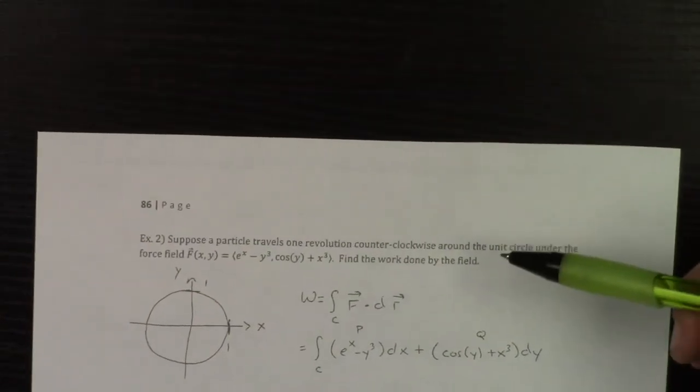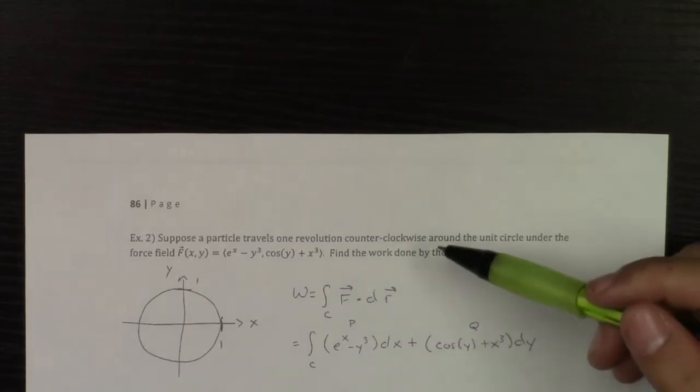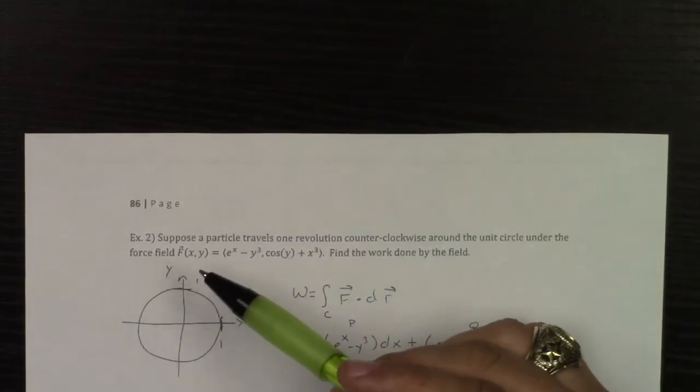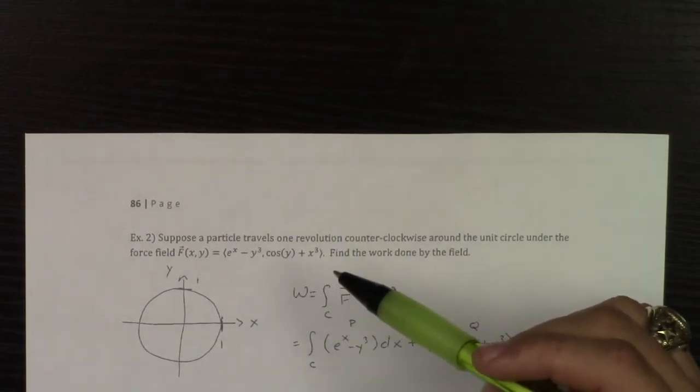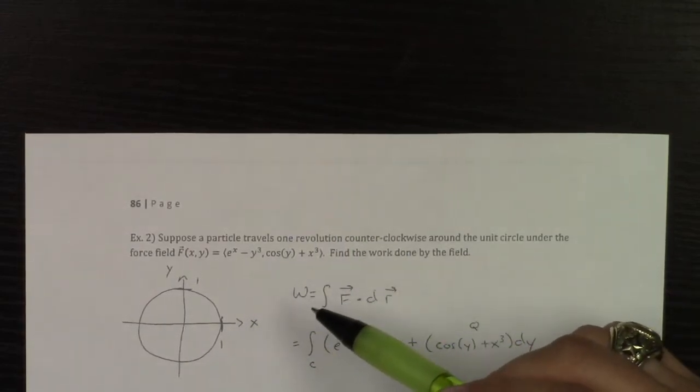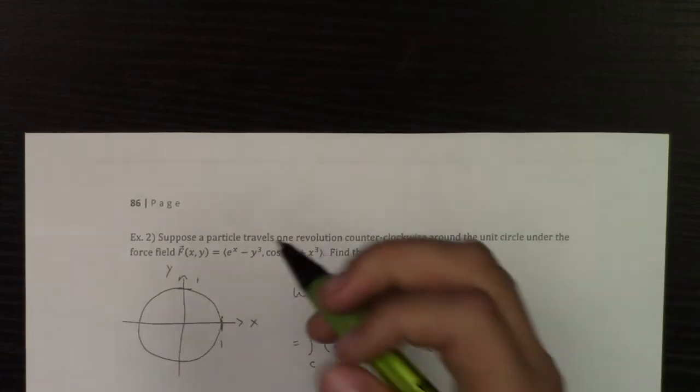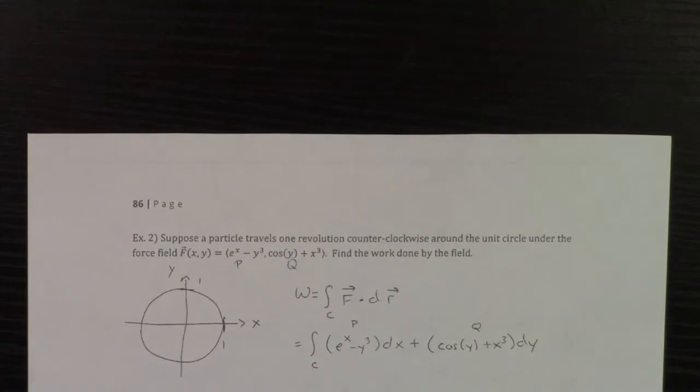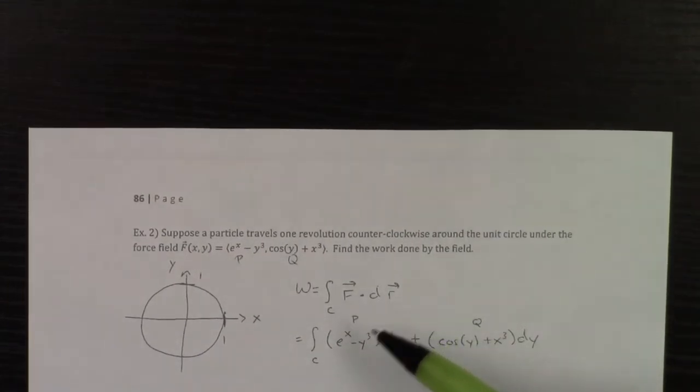Suppose a particle travels one revolution counterclockwise around a unit circle under the force field f, which is given by the following function. Find the work done by that field. Remember, work is just the line integral of f dotted with dr, where this is going to be the p, and this is going to be q. And so, if I want to do f dotted with dr, I'm going to do the p dx plus q dy.